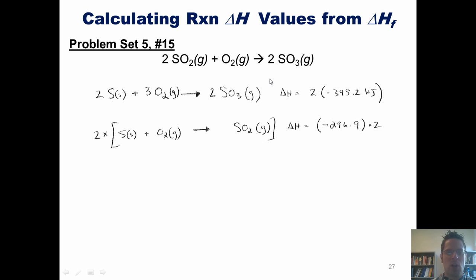You'll also note that the SO2 in our target reaction is on the left side of the equation, not the right side. As a result, we have to take this overall expression and have everything change sides. Thus, if I took two SO2 molecules and had them decompose into parent elements, the overall delta H switches signs from negative 296.9 to positive 296.9.